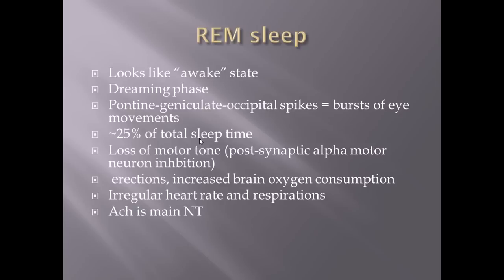Let's look at REM sleep. REM sleep is going to be exactly the opposite of stage 3 — you're going to be paralyzed for the most part. You lose post-synaptic alpha motor neuron inhibition, virtually paralyzing you, except for your lungs and heart of course. There are a couple other muscles that aren't paralyzed, but one key muscle to note is your eye movements. Your eye movements will not be paralyzed, and that is the origin of the name: rapid eye movement sleep, or REM sleep.